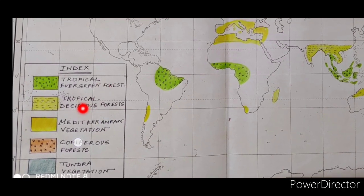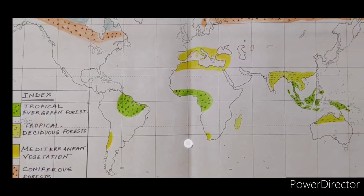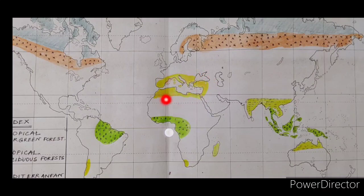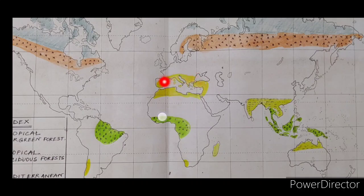Next is the Mediterranean forest. This is the Mediterranean Sea, and on both sides — southern part Africa, northern part Europe — surrounding the Mediterranean region, Mediterranean type of climate and vegetation grows. In the northern part of the African continent, the east and west of some Asian countries, and the south of some European countries, you can find the Mediterranean forest.